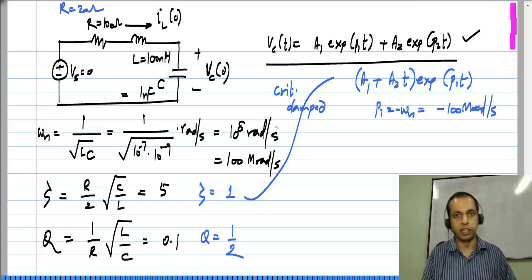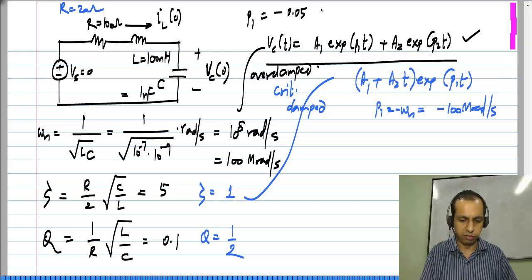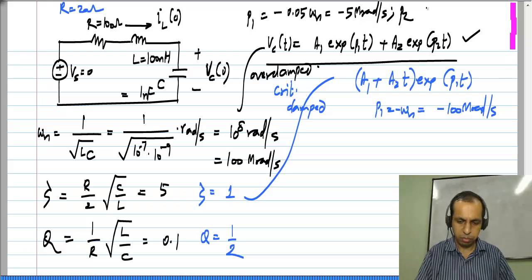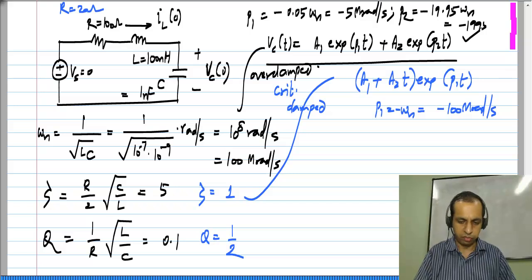Second, the first case that I considered with R equal to 100 ohms, this is overdamped. And in this case, one of the roots P_1 is at minus 0.05 omega_n, or minus 5 mega radians per second, and P_2 will be at minus 19.95 omega_n, which corresponds to minus 1.995 giga radians per second.